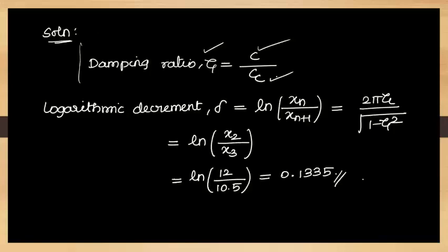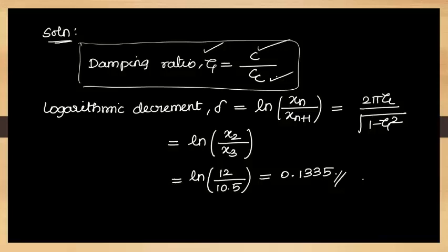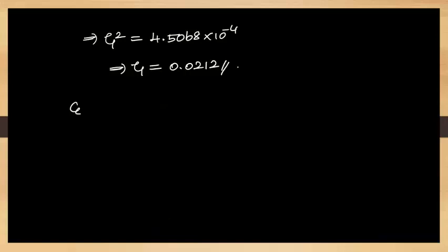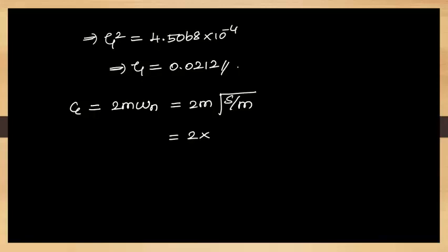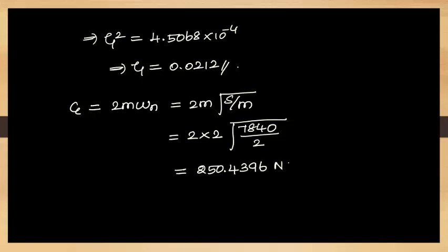Now we can calculate the critical damping coefficient cc using the formula cc = 2m·ωn, where ωn is the circular natural frequency calculated as √(S/M). With stiffness S = 7840 N/m and mass M = 2 kg, the critical damping coefficient cc is obtained as 250.4396 N·m⁻¹·s.